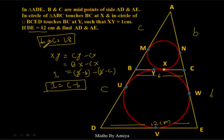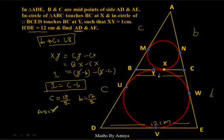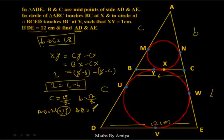Solving B + C = 18 and C − B = 1, we get C = 19/2 and B = 17/2. Since AD = 2C, AD = 19 cm. And AE = 2B = 17 cm. These are our answers.